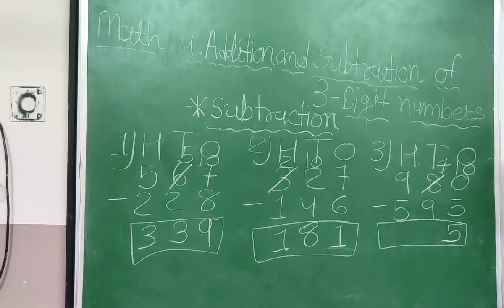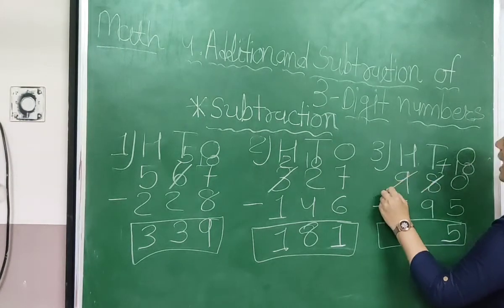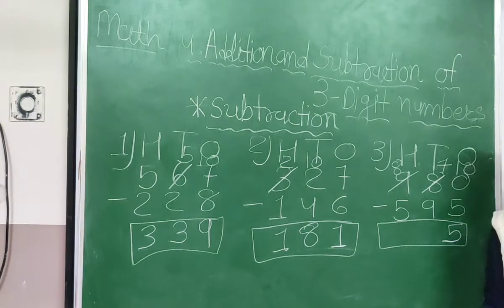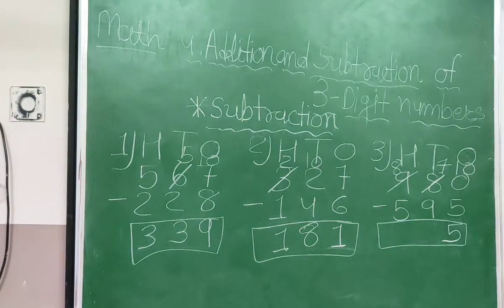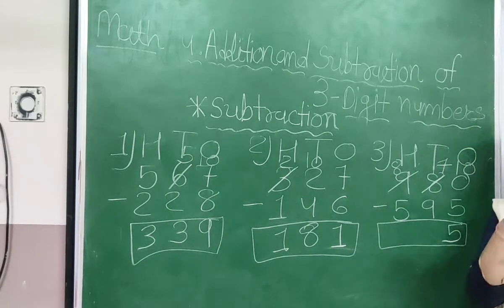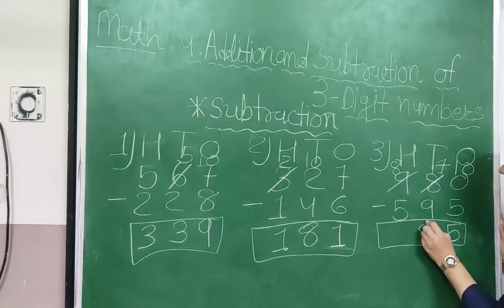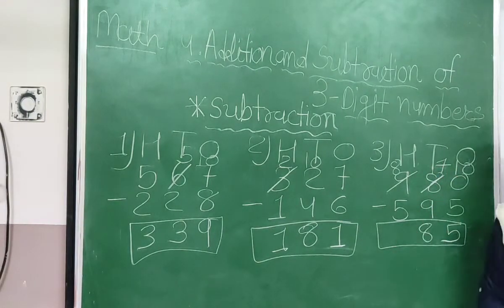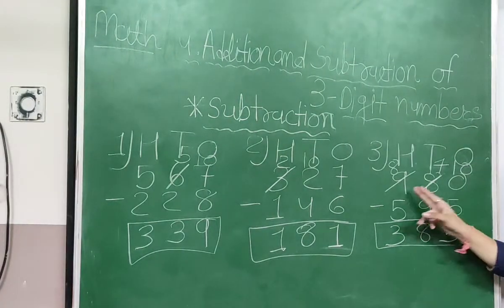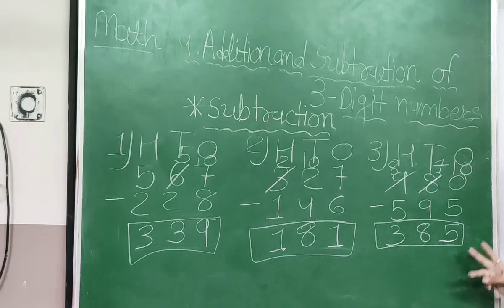7 minus 9 — is it possible? It is not possible. So here I am crossing 9 and writing 8, and borrowing 10. So 17 minus 9 — count from 9: 10, 11, 12, 13, 14, 15, 16, 17. Count the steps: 5, 6, 7, 8. So 17 minus 9 is equal to 8. Now 8 minus 5 — it is possible. Count from 5: 6, 7, 8. So the answer is 3. 980 minus 595, the answer is 385.